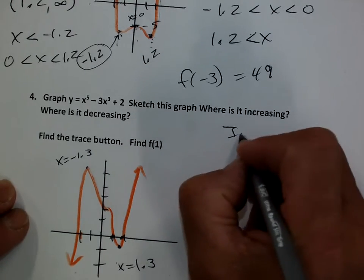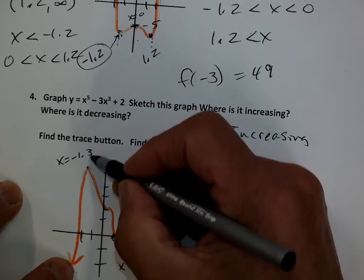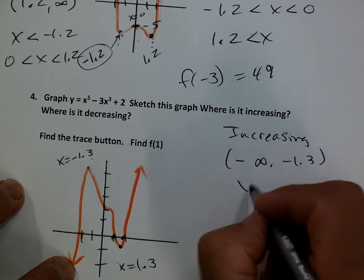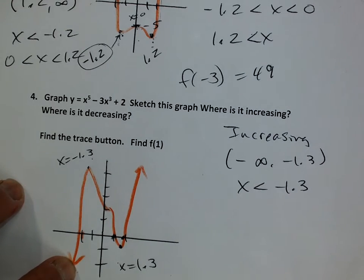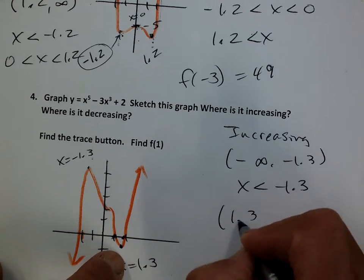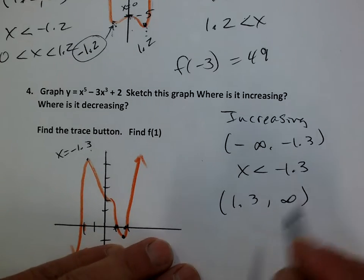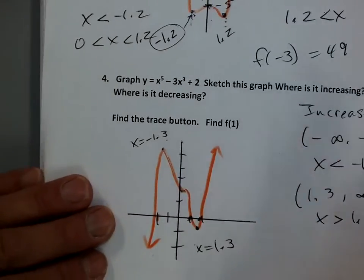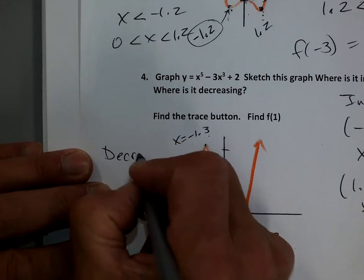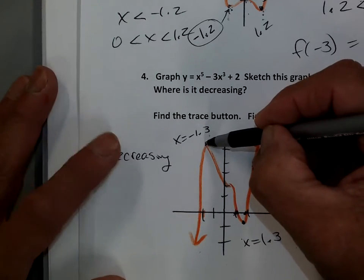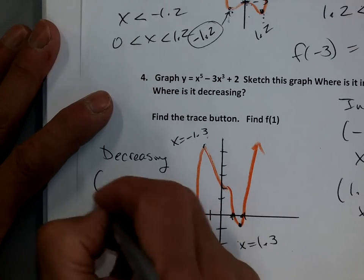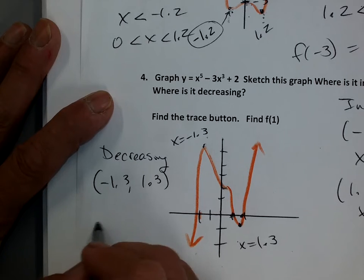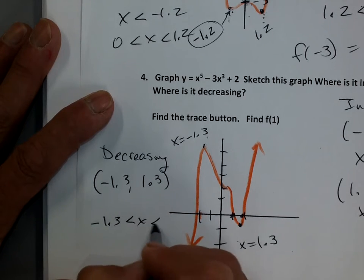Increasing and decreasing: it's going uphill from negative infinity to negative 1.3 — as set notation, x is less than negative 1.3. It's also increasing from 1.3 to infinity — set notation x is greater than 1.3. Decreasing is just going downhill from negative 1.3 to positive 1.3 — interval notation: negative 1.3 to 1.3, or set notation: negative 1.3 less than x less than 1.3.